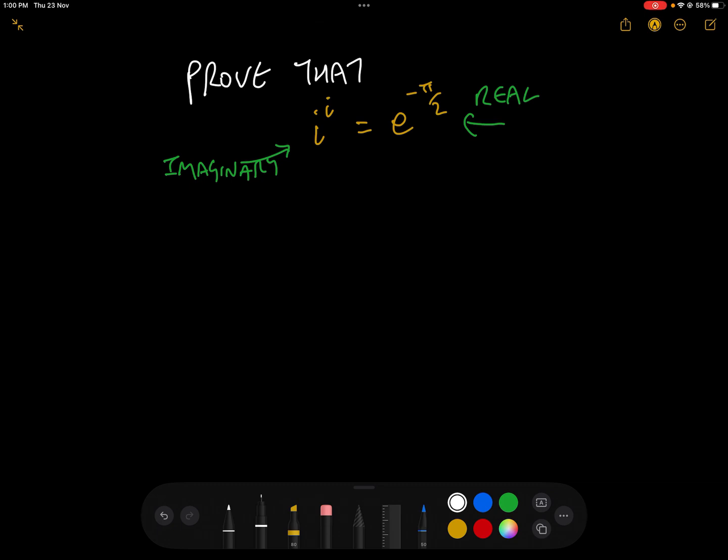Okay, so we've got one minute to prove that i to the power of i, both of which are imaginary, equals e to the minus pi over 2, which is real. So let's go. We have that i equals the square root of minus 1, which is a number that only exists in the imagination of mathematicians because there is no real square root of minus 1.